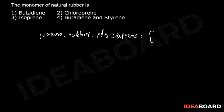As per structure, CH2-CH double bond, C(CH3)-CH2, n times — this is a natural rubber unit, polyisoprene.